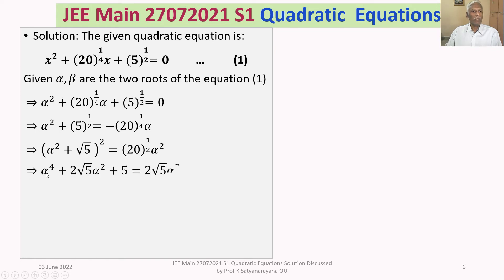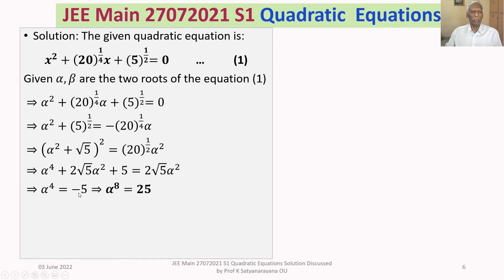Expanding the left side: alpha to the power 4 plus 2 root 5 times alpha squared plus 5 equals 2 root 5 times alpha squared. Cancelling 2 root 5 alpha squared on both sides, we get alpha to the power 4 equals minus 5. And since we want alpha to the power 8, squaring alpha power 4 gives alpha power 8 equals 25.